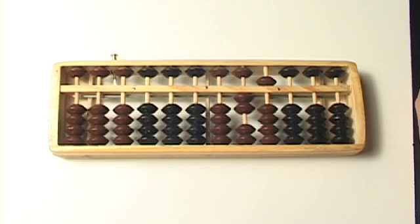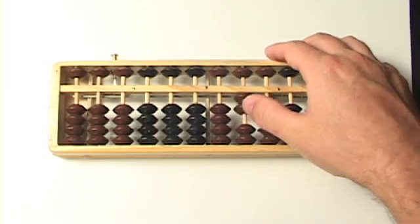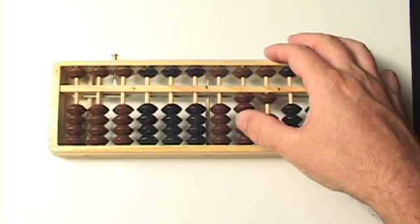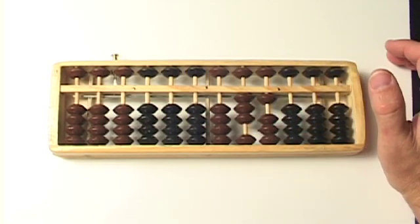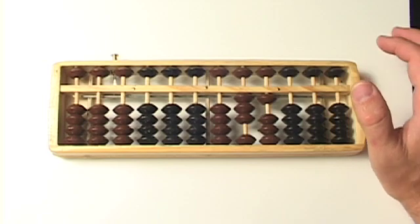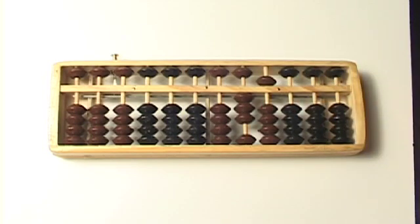All right. Let's do 21 plus 14. 21 plus 14. Well, here we go. 1. Oh, there's not 4 beads down here. That means I have to do complimentary numbers. And so the compliment to 4 is 1, which means I take away 1 and add the 5. 21 plus 14 is 35. There we go.